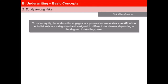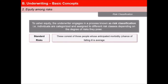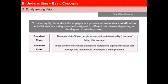Individuals are categorized and assigned to different risk classes depending on the degree of risks they pose. There are four such risk classes. First, standard risks: these consist of those people whose anticipated morbidity or chance of falling ill is average. Second, preferred risks: these are the ones whose anticipated morbidity is significantly lower than the average and hence could be charged a lower premium.